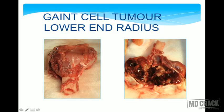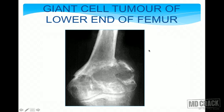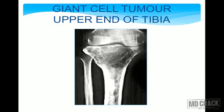This is a cut section of a giant cell tumor (osteoclastoma) taken from the distal radius, showing the bone and tumor that have been excised. Another x-ray picture shows a giant cell tumor of the lower end of the femur — you can see it is eccentrically located, not in the midline, giving a soap bubble appearance with expanded cortex and no calcification. Another x-ray of the upper end of the tibia also shows the proximal part affected with eccentric position and soap bubble appearance.